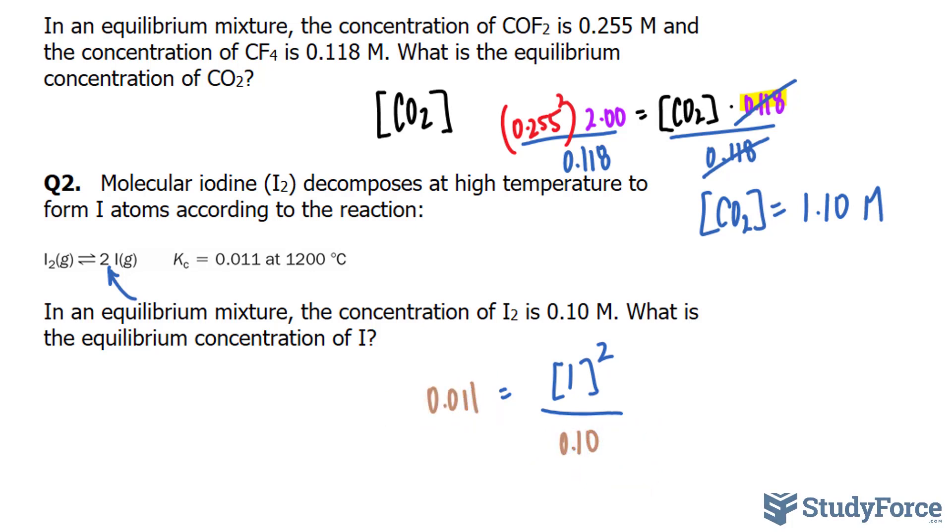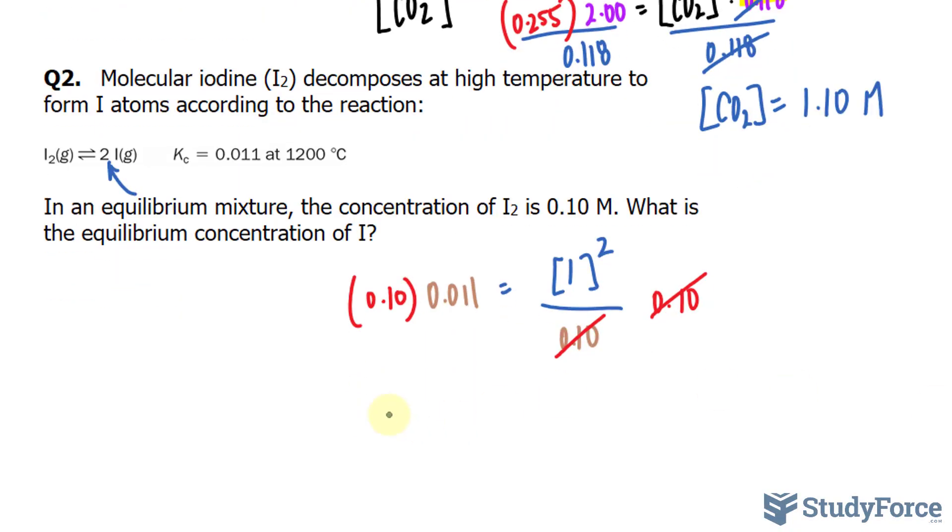Using the same algebraic procedure as before, I'll multiply both sides by the factor underneath. That cancels out. Remember that that number right there is two significant figures, and our final answer should also be two significant figures. And we're left with 0.10 times 0.011 is equal to iodine squared.